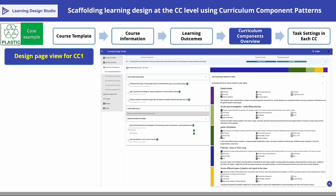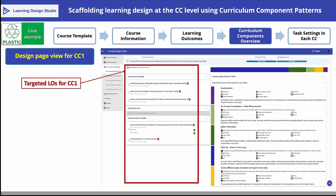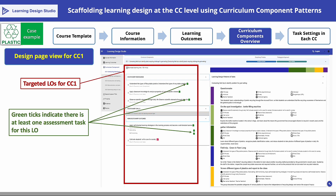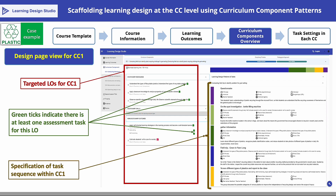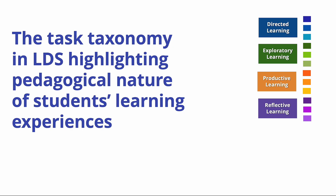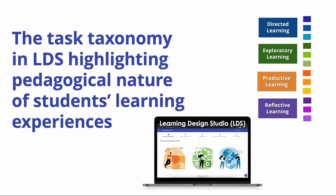LDS can display the details of the sequence of all five tasks in CC1. The middle panel shows the learning outcomes specified for accomplishment through this CC. Each green tick against the learning outcomes indicates that there is at least one assessment task for the specific outcome. The rightmost panel shows the details of the five tasks in this CC. As we move to finer-grained design specifications at the task level, we will introduce an important feature of LDS: its task taxonomy, which helps to highlight the pedagogical nature of students' learning experiences for different task types.